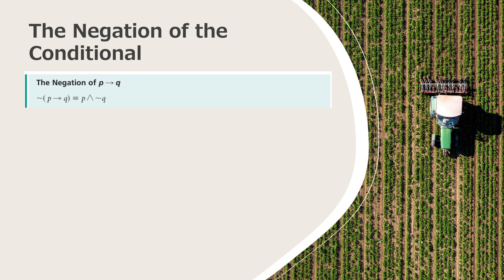The negation of a conditional statement: the negation of p implies q has the equivalent form p conjunction negation of q. So the negation of p→q is p ∧ ¬q.